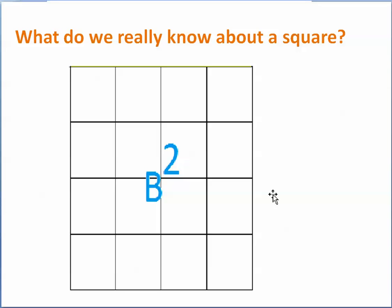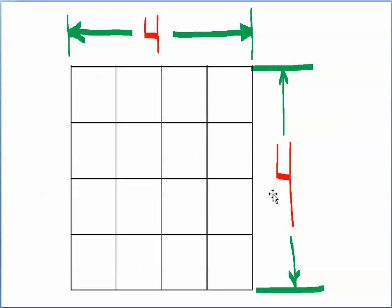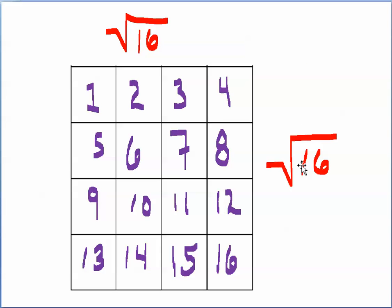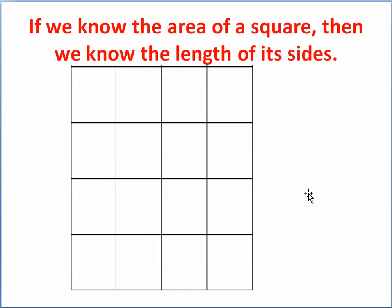What do we really know about a square? It turns out we know a lot of things about a square. Here we have a square that's 4 by 4 — 4 units long by 4 units long. 4 times 4 is 16, so we have 16 smaller squares. We can rewrite 4 as the square root of 16. So if I have a square and I know what its area is, the length of one side is the square root of the area. If we know the area of a square, then we know the length of its sides.